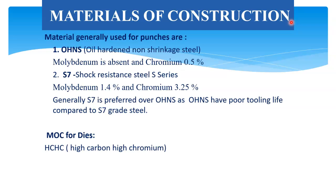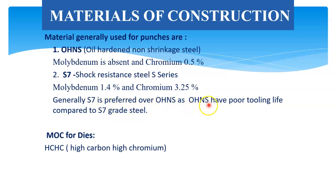Now we will discuss about material of construction of punches and dies. There are two types of material for punches. First is OHNS — oil hardened non-shrinkage steel — which contains chromium 0.5% and no molybdenum. The second is S7 — shock resistant steel, S series — which contains molybdenum 1.4% and chromium 3.25%. Generally, S7 is preferred over OHNS as OHNS has a poor tooling life compared to S7 steel. The material of construction for dies is HCHC — high carbon, high chromium.